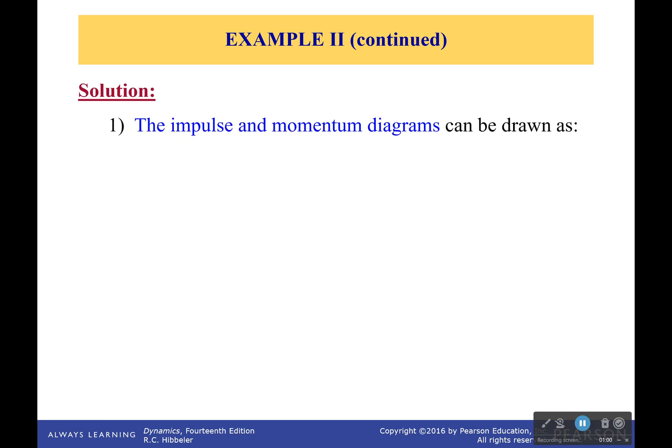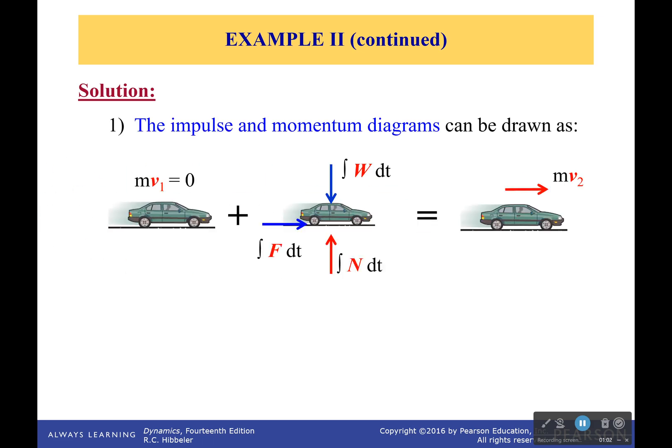First things we've got to do: an impulse momentum diagram. First off momentum is zero. Afterwards momentum is something else. And in between that time we have all these things acting on it.